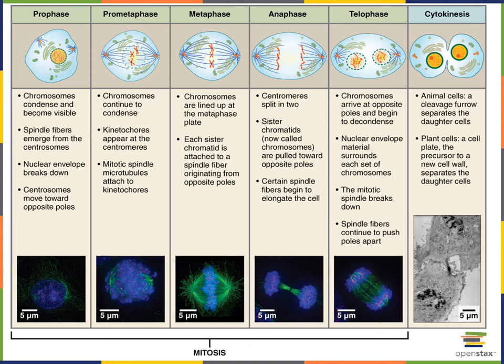The centrosomes will start to produce microtubules, generating a structure known as the mitotic spindle. These microtubules are growing towards the nucleus as the nuclear envelope — the outer barrier of the nucleus — starts to break down.